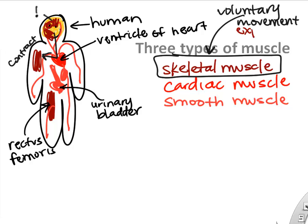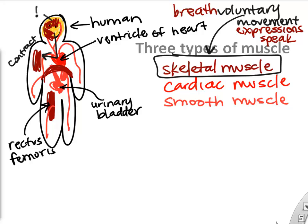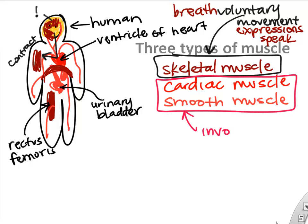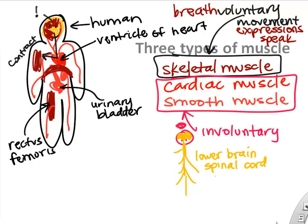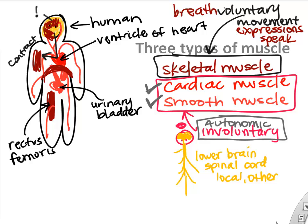We can voluntarily do things like move our limbs, make facial expressions, speak, or breathe. Cardiac muscle and smooth muscle are involuntary, meaning our brain or local signals control them, but we don't consciously control those. Lower brain centers, local control, or hormonal control will affect cardiac and smooth muscle — we may also call that autonomic control — compared to voluntary control of skeletal muscle.